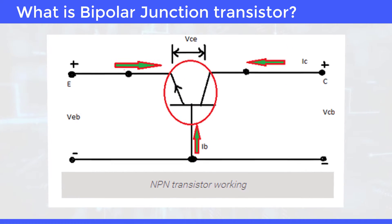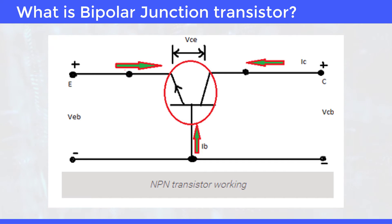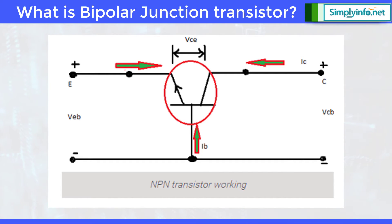The base region is thin and lightly doped by holes. Electron-hole combination occurs and some electrons remain in the base region, causing a very small base current IB. The base-collector junction is reverse biased to holes in the base region and electrons in the collector region, but it is forward biased to electrons in the base region. Remaining electrons in the base region attracted by the collector terminal cause collector current IC.